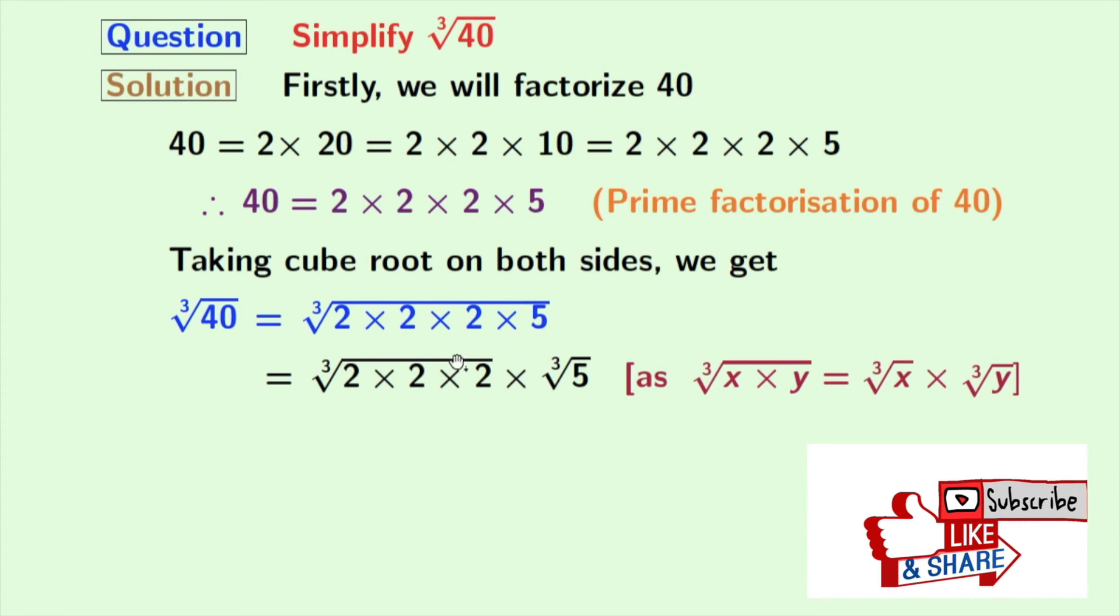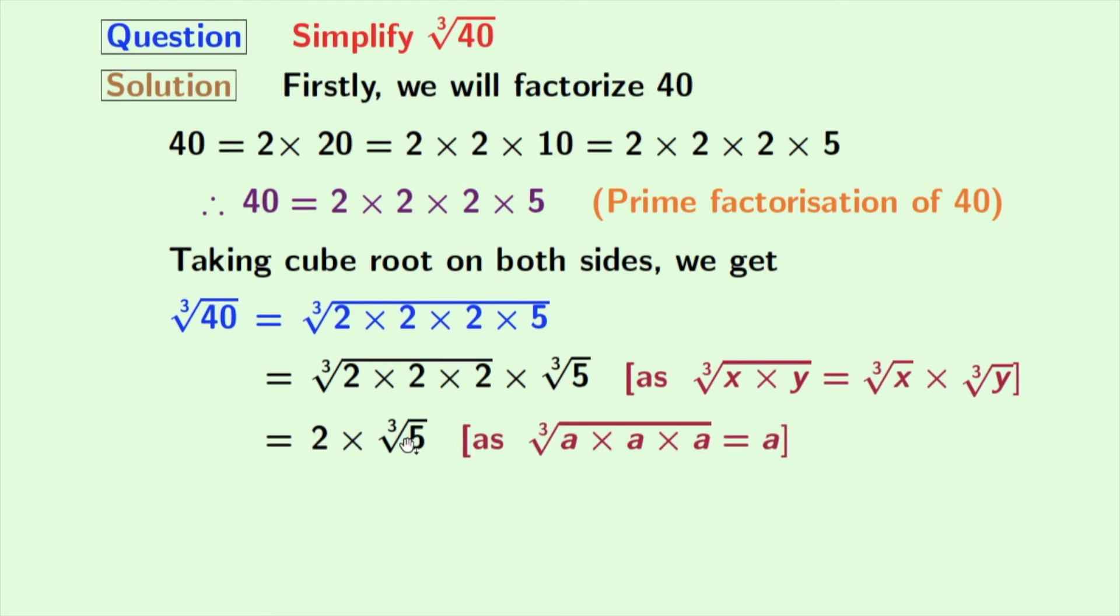Now from the first cube root we get 2 and the second cube root, that is cube root of 5, remains the same. In the first cube root we have used the rule of cube root of a times a times a is equal to a. Here a is 2. So finally we have 2 cube root of 5 as our answer.